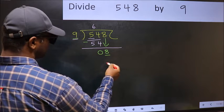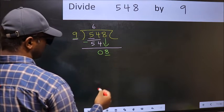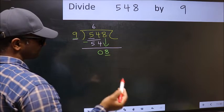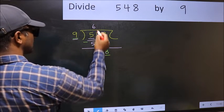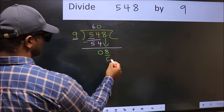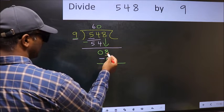Which number should we take here? If I take 1, we will get 9, but 9 is larger than 8. So what we should do is we should take 0, so 9 into 0 is 0.